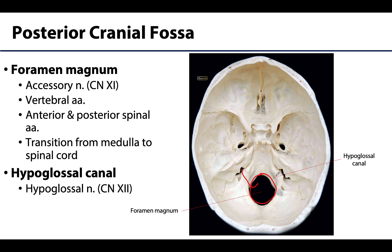Lastly, the hypoglossal canals are located close to the foramen magnum but tucked into the surrounding bone and can be more difficult to identify. It is through these hypoglossal canals that the hypoglossal nerves — cranial nerve XII — exit the skull to head toward the tongue.